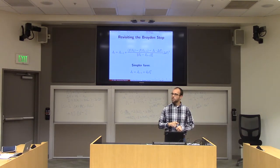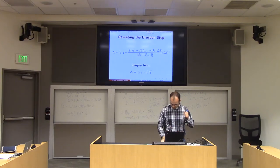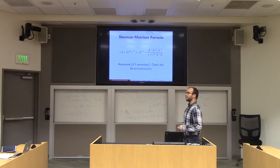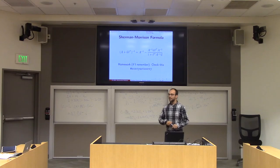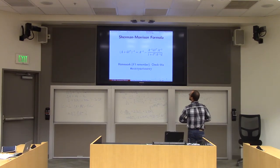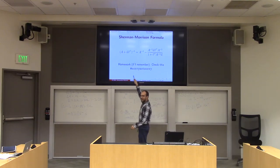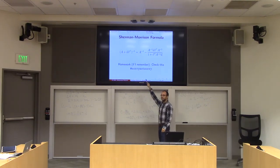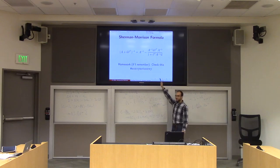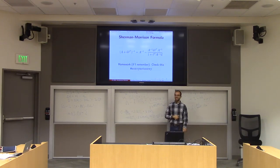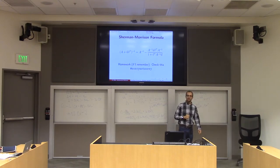There is one crowning result of theoretical linear algebra, which I'm going to leave on your homework. The basic idea is that if I take a matrix A and add an outer product of two vectors to it, I can actually write down the inverse of this new updated matrix in terms of the inverse of A.